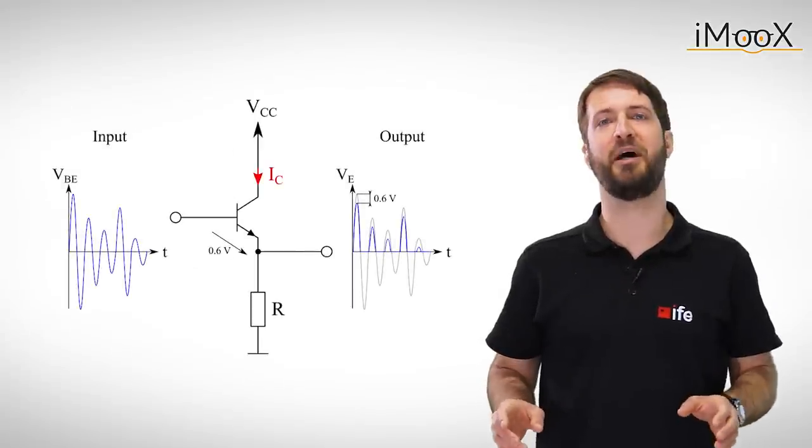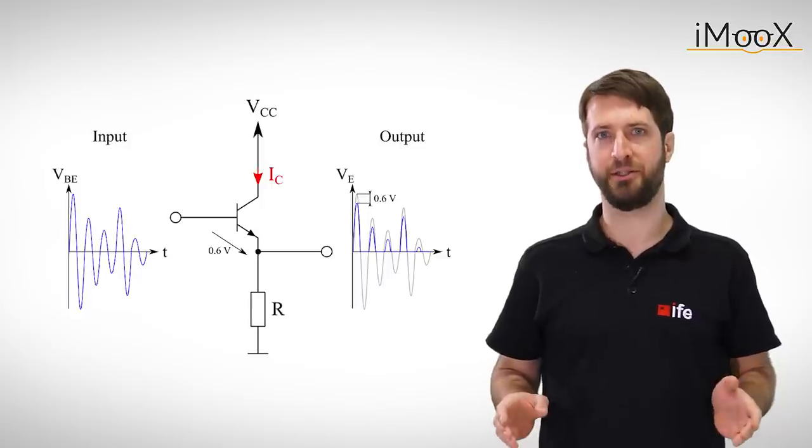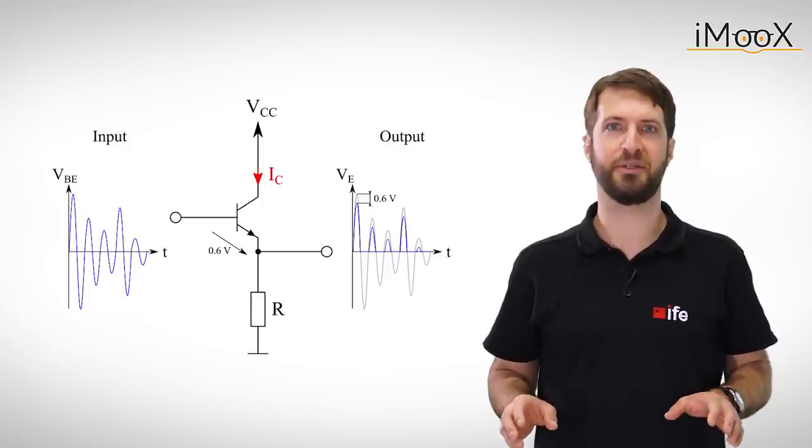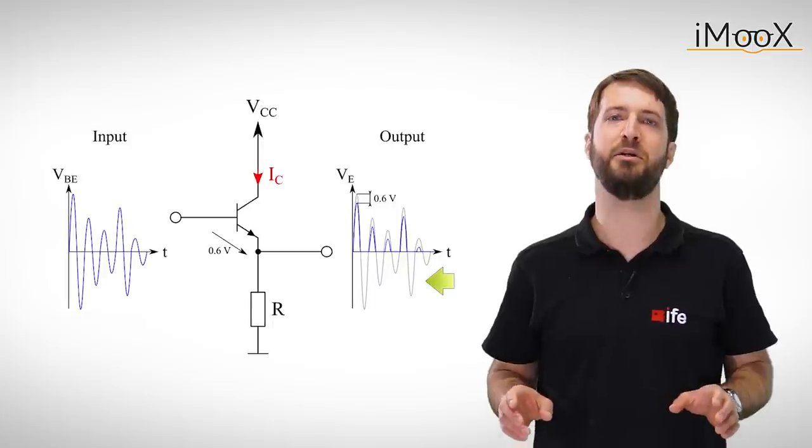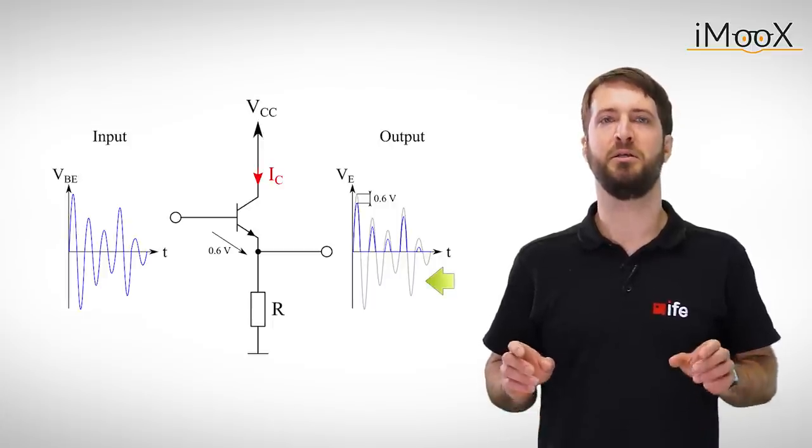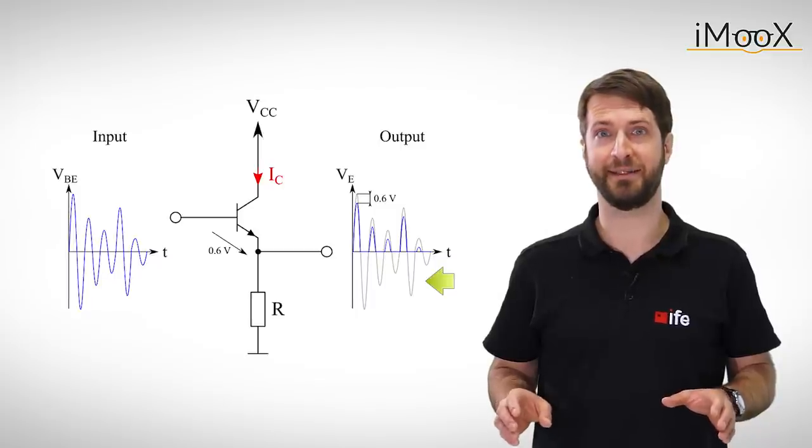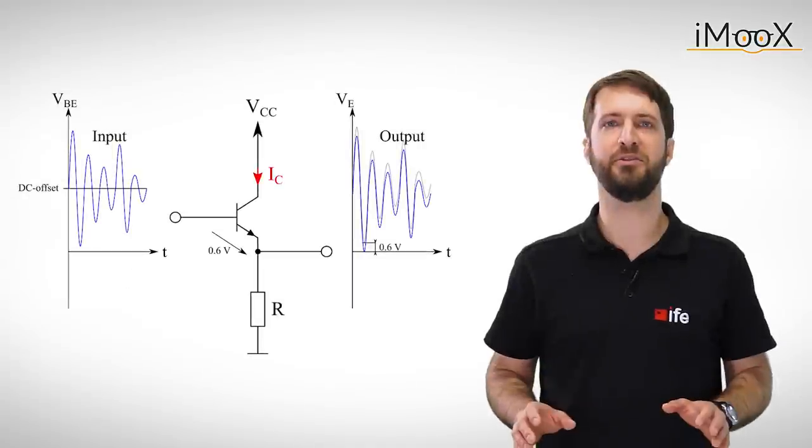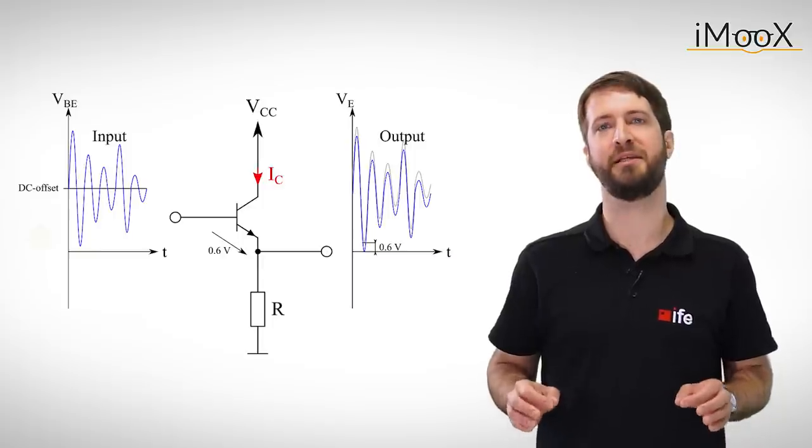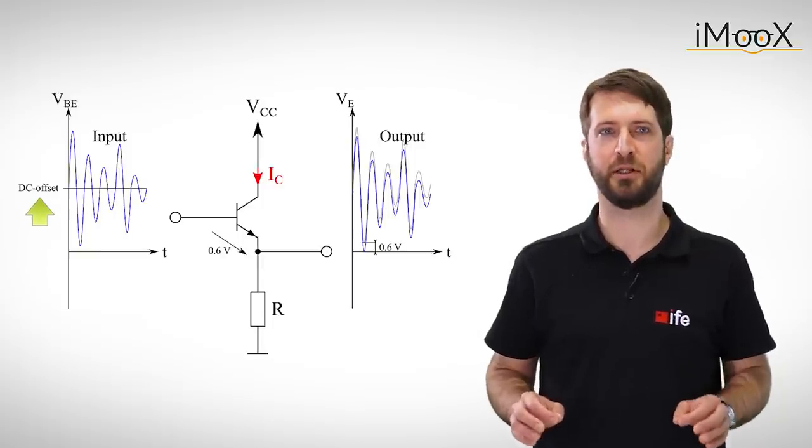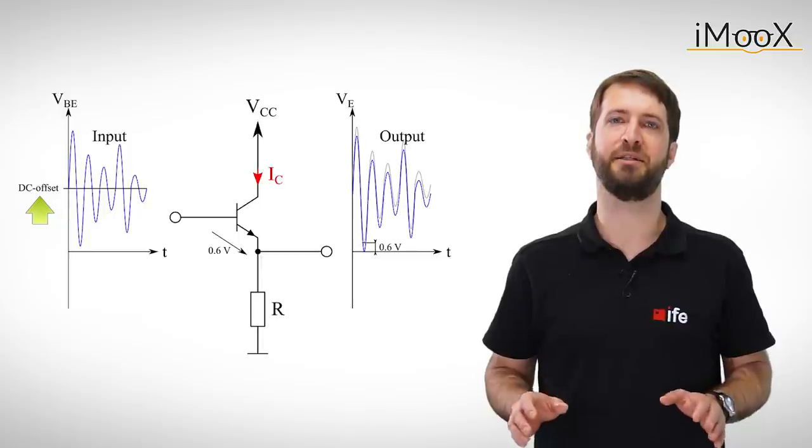But if we want to amplify an AC coupled signal, like an audio signal, we have to make sure that we don't cut off the negative swing of the output signal. You might heard of this effect, it's called clipping, and it sounds like this. In order to avoid clipping, we simply add a DC offset to the input signal. This is called biasing, and it is necessary for any transistor amplifier.